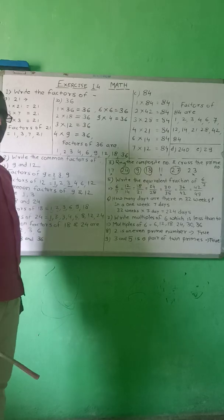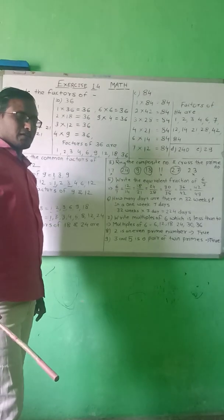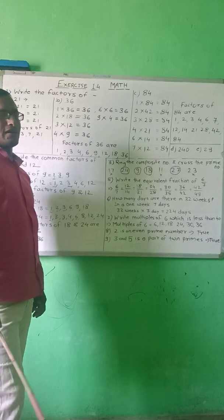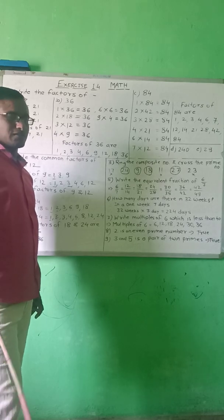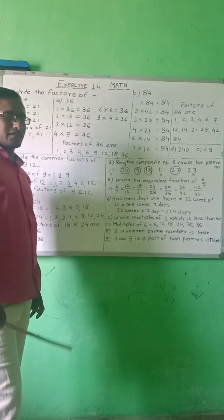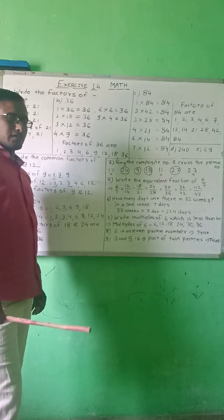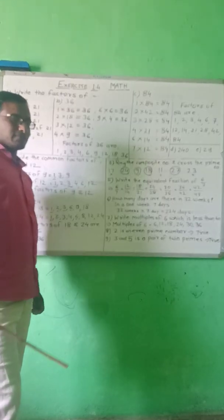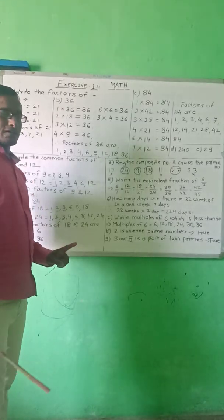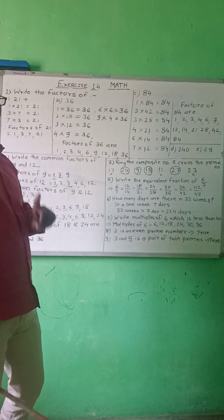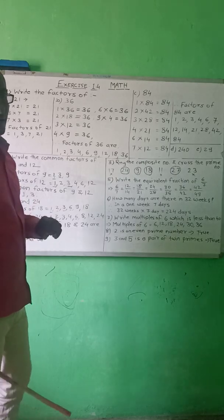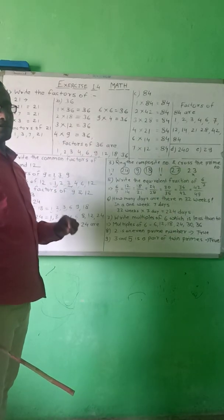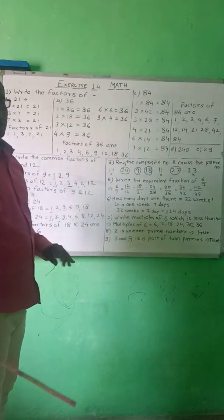First, we understand what factors are. When a number is exactly divided by another number, it is called a factor of that number. In factors, always two points are remembered: first, 1 is a factor of every number, and second, the greatest factor of every number is the number itself.